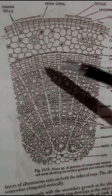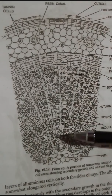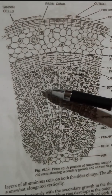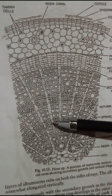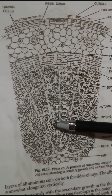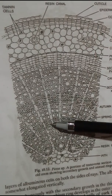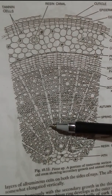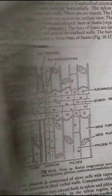These medullary rays are mostly uniseriate — that means they are arranged in a single row — and they are about 2 to 12 cells in height. Sometimes the medullary rays are multi-seriate, that is, arranged in many rows, but only when associated with resin ducts lined with thin-walled cells.